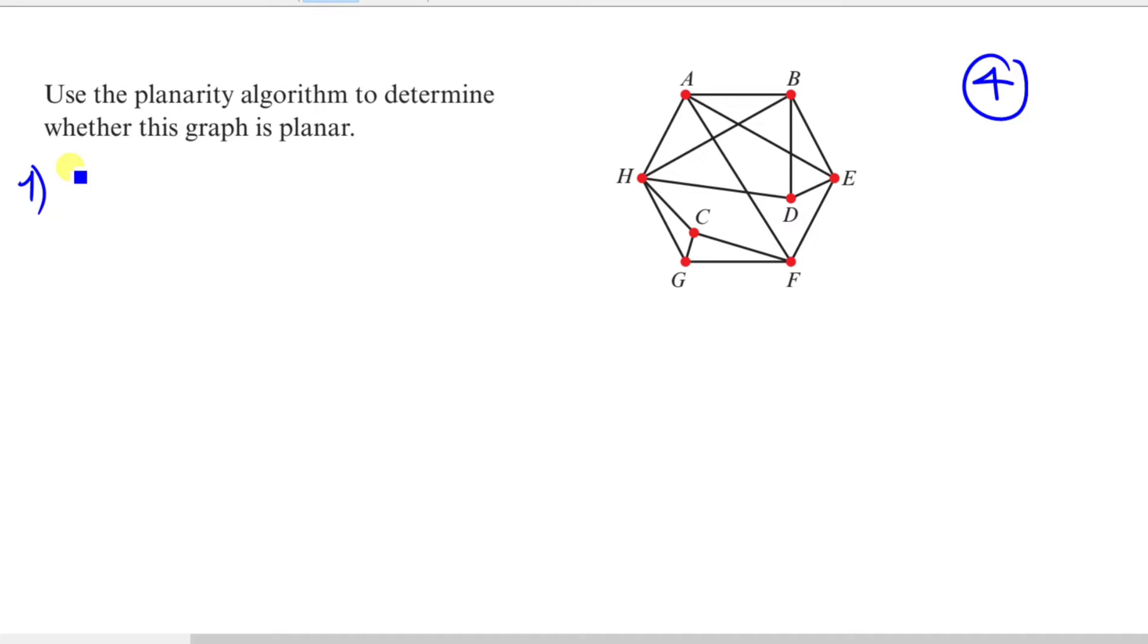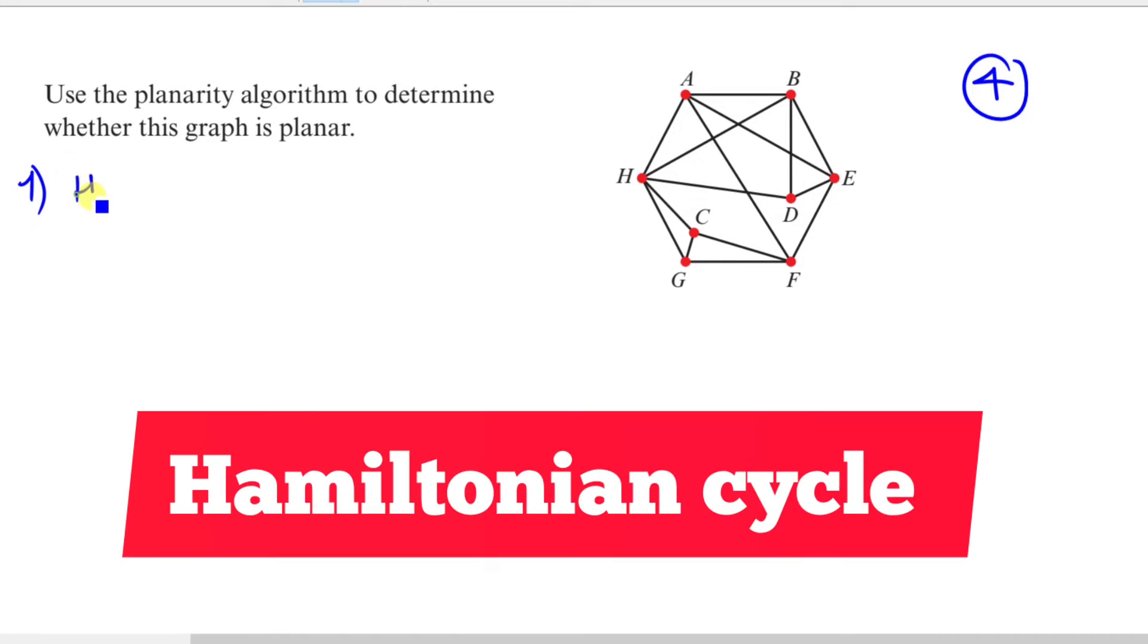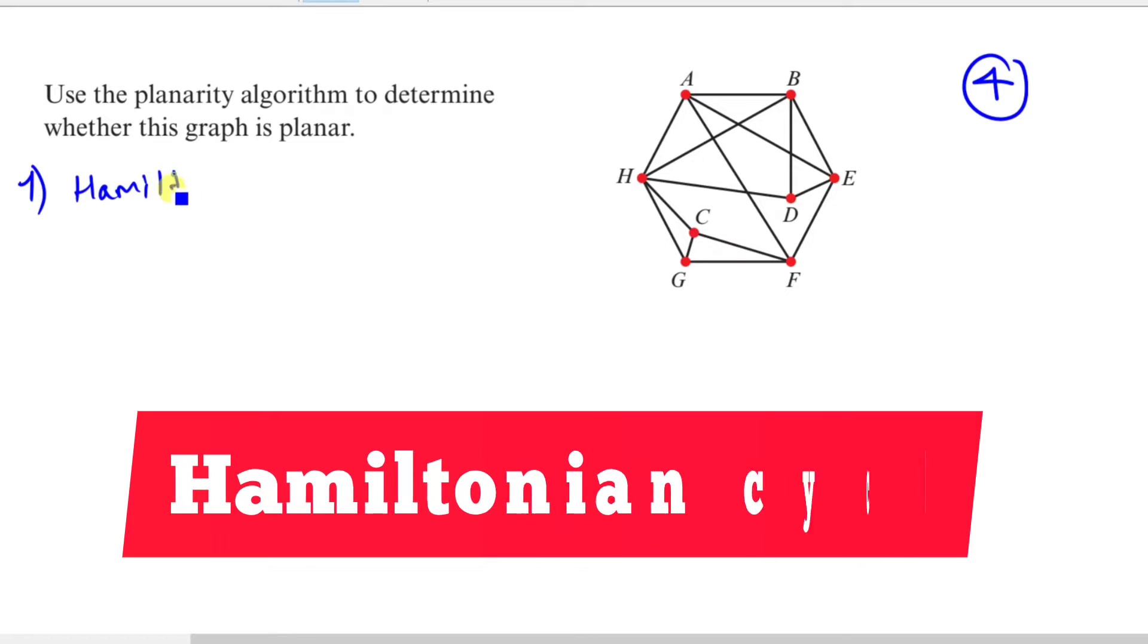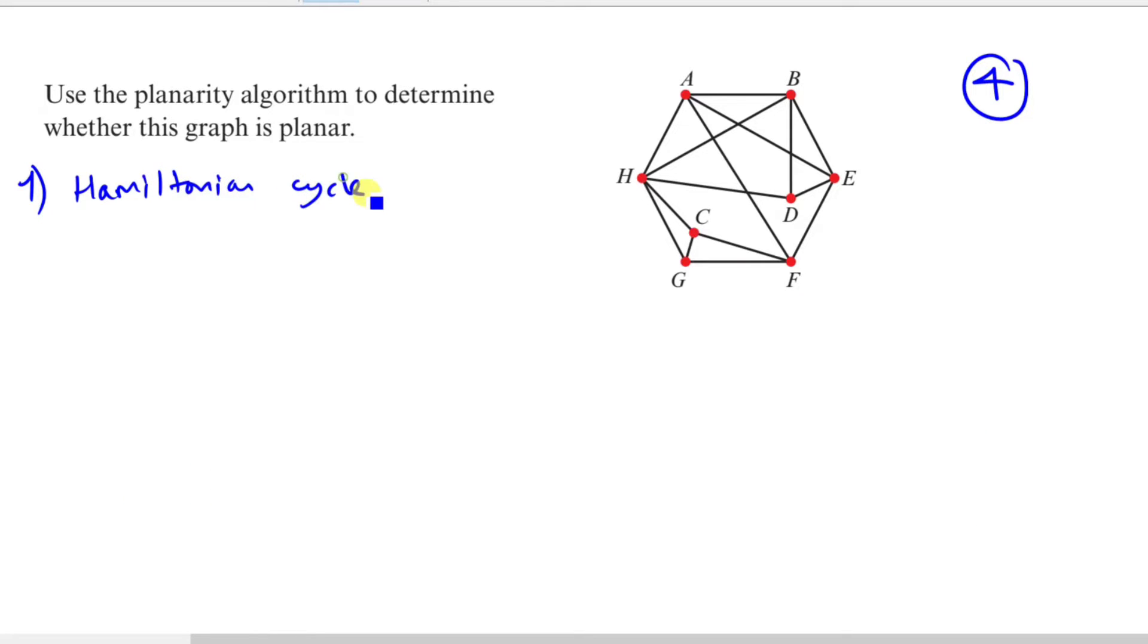Step one is to figure out whether or not this graph has a Hamiltonian cycle. Now a Hamiltonian cycle is simply telling us that you start from one point, say A, and you must go through every point exactly once and return to the same point.